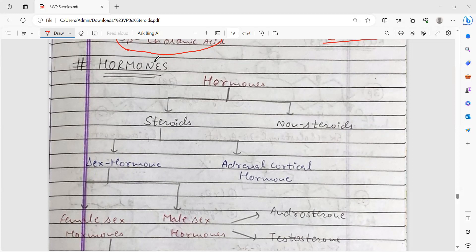Good morning friends, today we will discuss the classification of hormones and then we will discuss the synthesis pathway of different types of hormones. So today we will discuss classification of hormones. Hormones are totally divided into two groups: steroids and non-steroids.